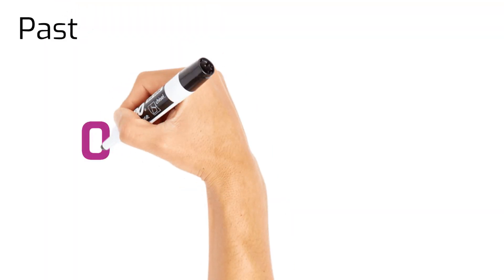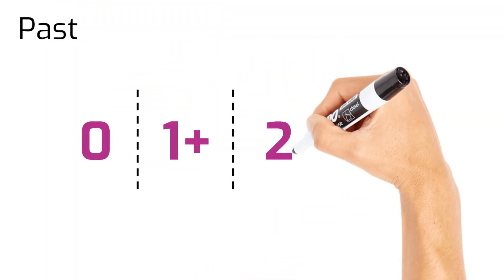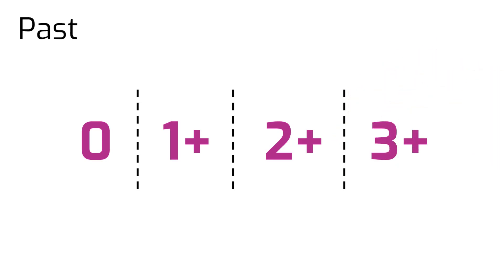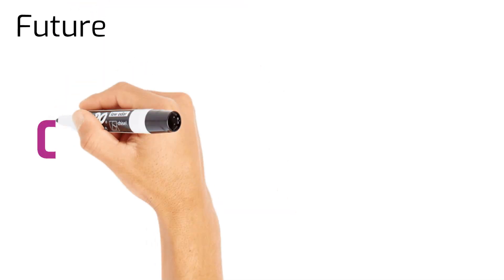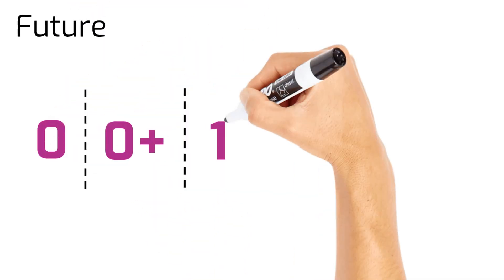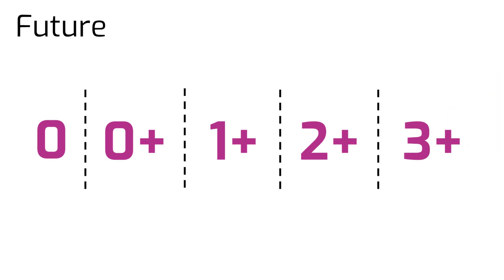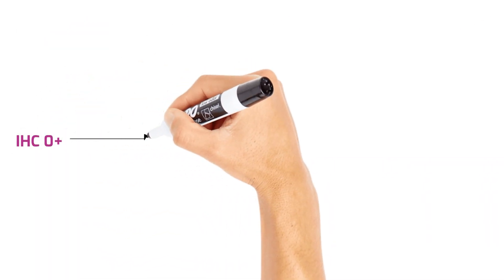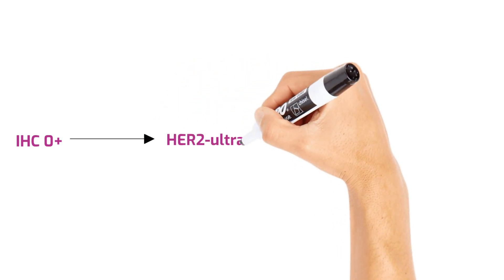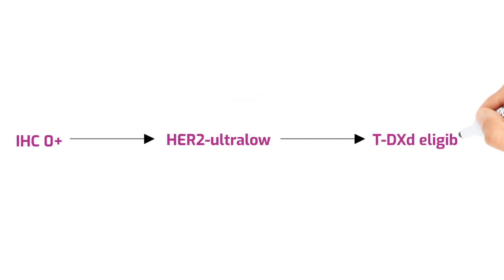IHC 0 plus is a new term. Comparing past versus future scoring: in the past, IHC was scored as 0, 1 plus, 2 plus, or 3 plus. Moving forward, IHC may be scored as 0, 0 plus, 1 plus, 2 plus, or 3 plus. IHC 0 plus indicates that there is an ultra-low level of HER2 expression, and patients with advanced breast cancer may be eligible for treatment with TDXD.